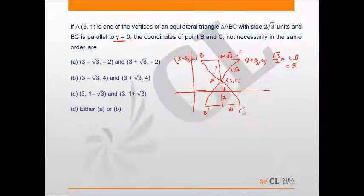In this second case, we can say that B' coordinates will be 3 - √3, comma -2. And similarly, 3 + √3, -2.